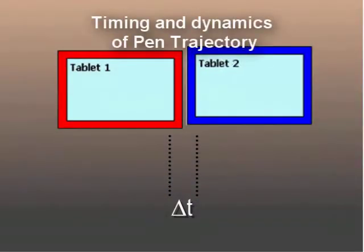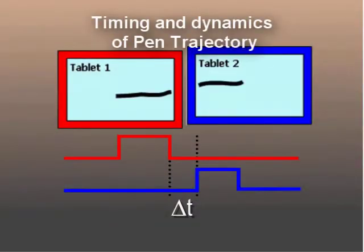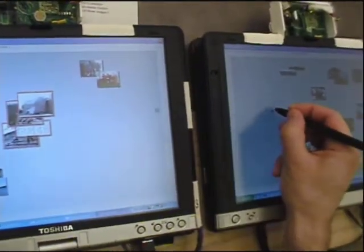The system works by matching up the timing and dynamics of the two separately observed halves of the user's pen stroke. Users can also move multiple photos by lassoing them and then stitching to the other screen.